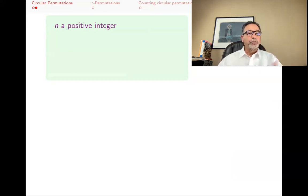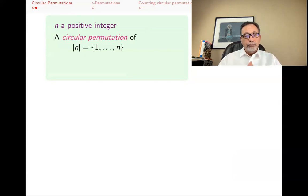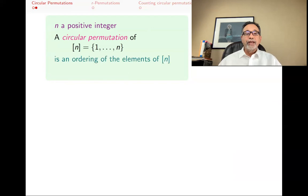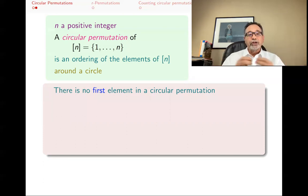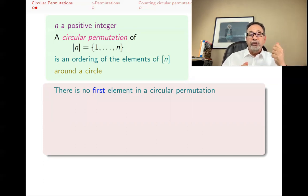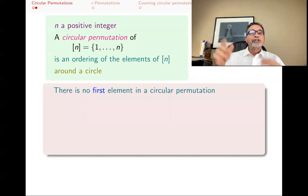Let's start with circular permutations. We start with a positive integer N. Bracket N is our prototype set with N elements, 1 through N. A circular permutation of that just means order the elements of bracket N around a circle. The key thing is that there's no first element in a circular permutation. In an actual linear permutation, it matters which element goes first, but in a circular permutation, because you're going around the circle, there's no first — everyone is just following the next person around.